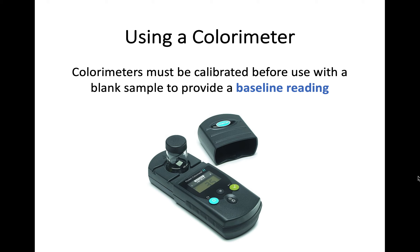One thing you need to be aware of is that you do need to calibrate the colorimeter. You can't just put in your sample and get an accurate reading. You first need to provide a baseline reading by adding a blank sample of liquid. With that blank sample, light should pass through with absolutely no issue. The colorimeter uses that as a baseline, and then when you use your actual solution it gives you an accurate measurement of how much light is passing through.